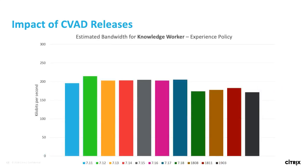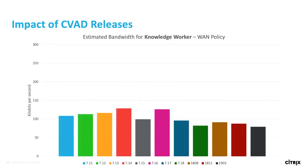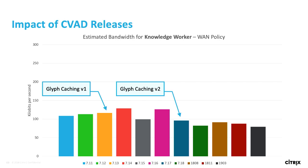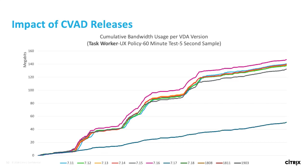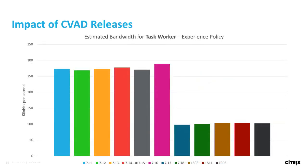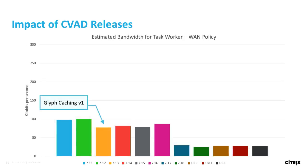When the WAN policy is set, almost half the content bandwidth is consumed compared to UX policy. Glyph caching was added in version 7.13 and glyph caching version 2 was added in 7.18. For the task worker workload — where VSI workloads focus more on Excel sheets and email management — as soon as glyph caching is enabled, the bandwidth drops dramatically. Glyph caching version 2 or later is where you want to be.